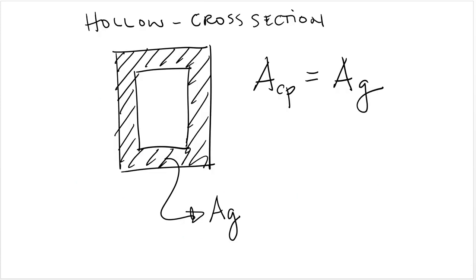One more detail is that if you are dealing with a concrete section which is hollow, then the value of ACP that you're going to use in the formulas is going to be equal to the gross sectional area of concrete. That is the area of concrete that is actually present in the member. So you're not going to take the area enclosed by the perimeter, you're going to take the actual concrete gross sectional area.